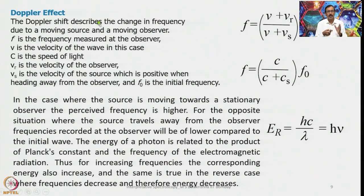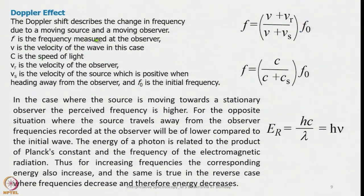Now, what is the Doppler effect? The Doppler shift describes the change in frequency due to a moving source and a moving observer. It is given by F = [(V + V_R) / (V + V_S)] × F₀, where F is the frequency measured at the observer, V is the velocity of the wave (c, the speed of light), V_R is the velocity of the observer, V_S is the velocity of the source (positive when heading away from the observer), and F₀ is the initial frequency. When the source moves towards the stationary observer, the perceived frequency is higher; when it travels away, the frequency recorded is lower. The energy of a photon is related to the product of Planck's constant and the frequency: E = hc/λ = hν, so increasing frequency means increasing energy and vice versa.